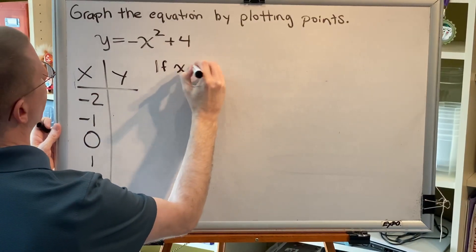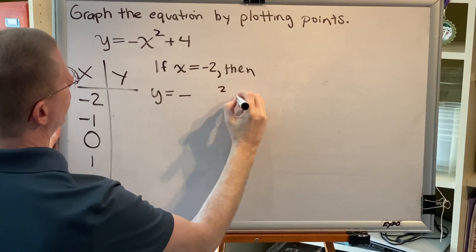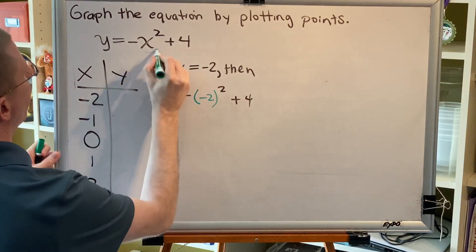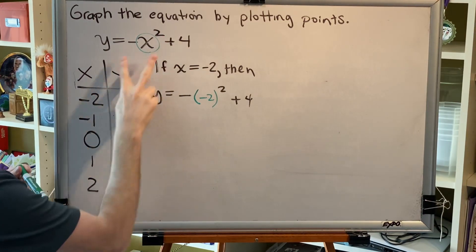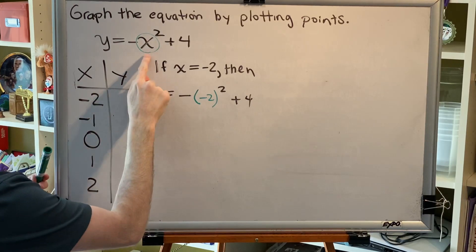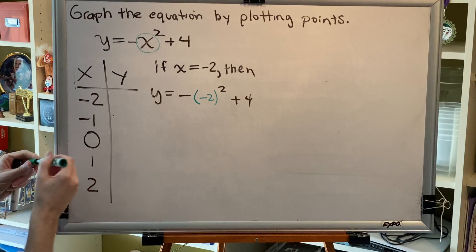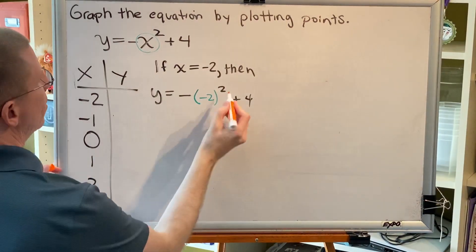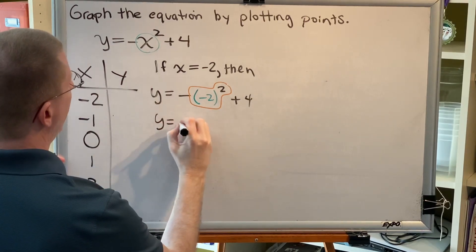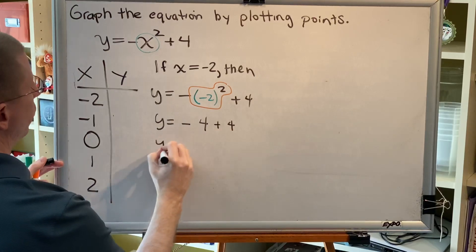First, if x equals negative 2, then y equals negative 3. Whenever you replace something with something new in algebra, the new thing needs to be put in parentheses if the thing you're replacing has an exponent or a multiplier or is being subtracted. This is actually a negative sign, not a subtraction sign, but because this x is being raised to an exponent and has the multiplier negative 1, when we replace it with something new it must be in parentheses. So the negative 2 must be put in parentheses. Follow order of operations, which says that exponents happen before multiplication by this negative 1. So y equals negative — negative 2 squared is 4, then multiplying by the negative makes it negative 4, and negative 4 plus 4 is 0.